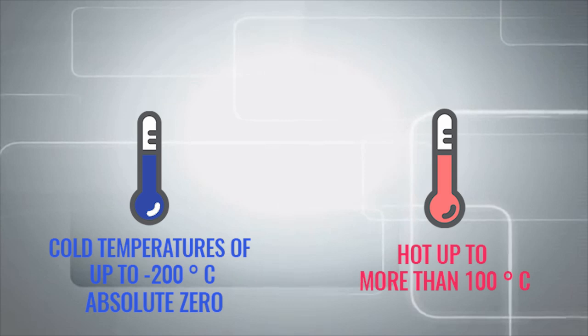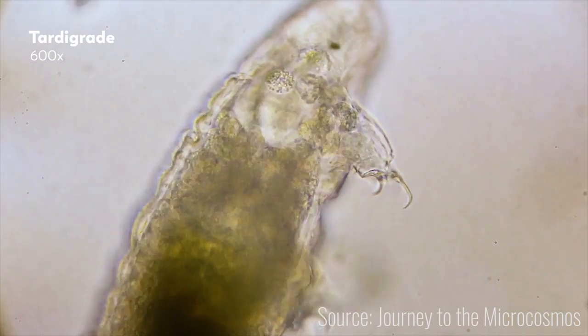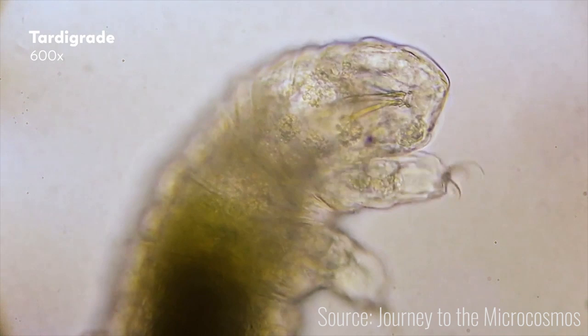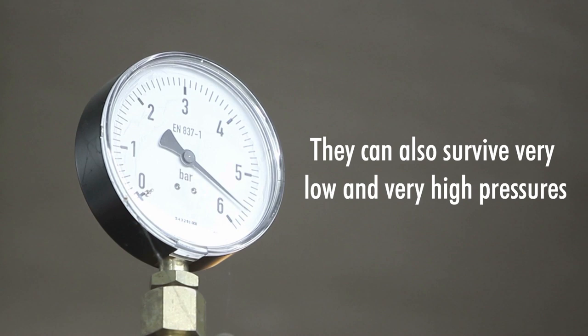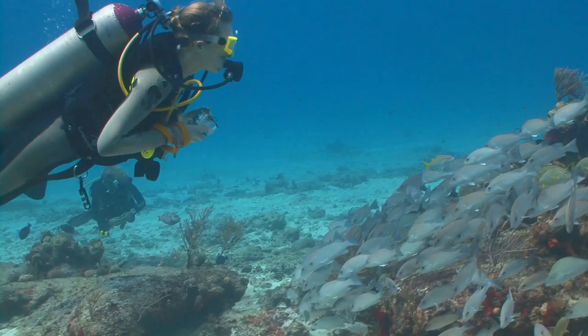In laboratory experiments, some tardigrades have survived the submersion in absolute alcohol. They can also survive very low and very high pressures. While you dive underwater, the pressure increases at a rate of 1 kilo per square centimeter after 10 meters deep.